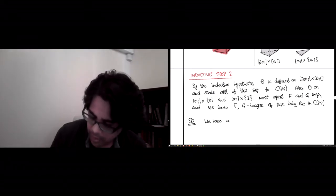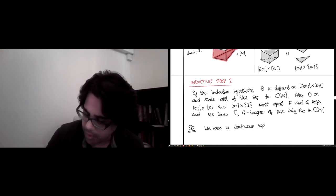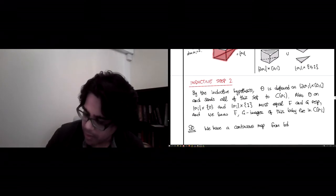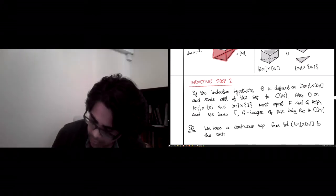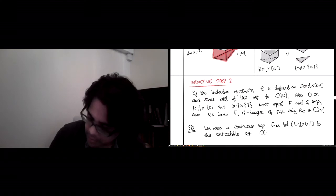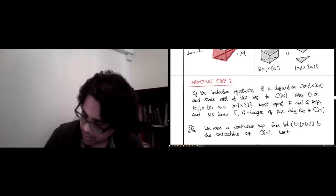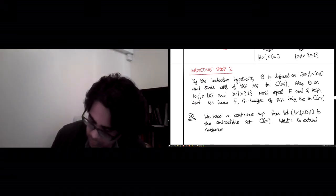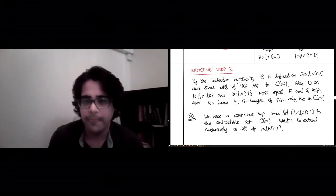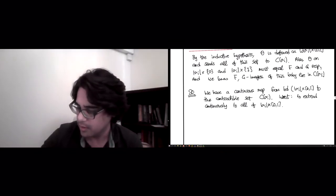So theta is defined on all pieces of the boundary. The left side, actually, I should probably say that this is the back of one of the faces. So that's a ribbon, and those are the other pieces, the top and the bottom. So it must equal f and g, and of course there, because f and g are carried by C, we know that f, g images off this boundary lie in C(sigma_i). So if you combine all of this stuff that we've learned about the boundary, we have a continuous map from the boundary of sigma_i cross [0,1] to the contractible set C(sigma_i). And what we want is to extend continuously, of course, to all of sigma_i cross [0,1].